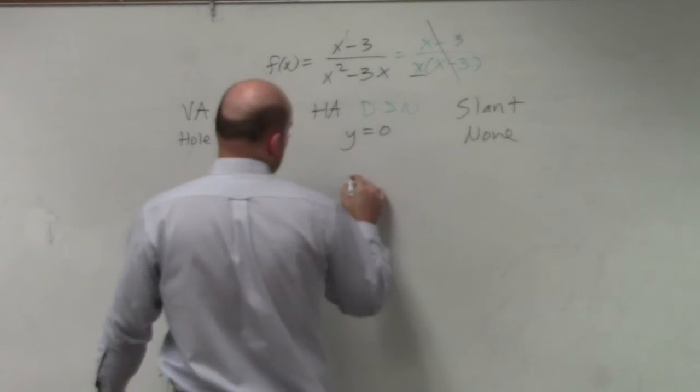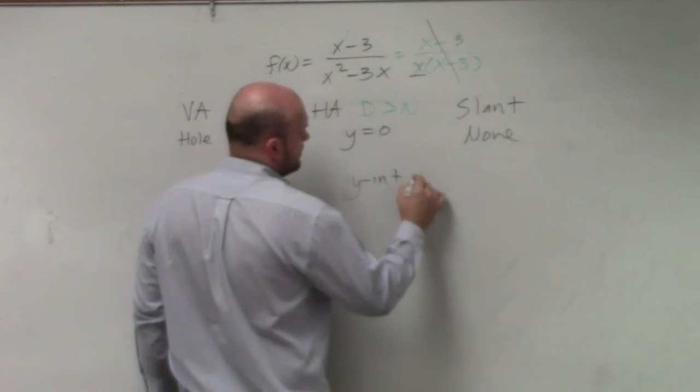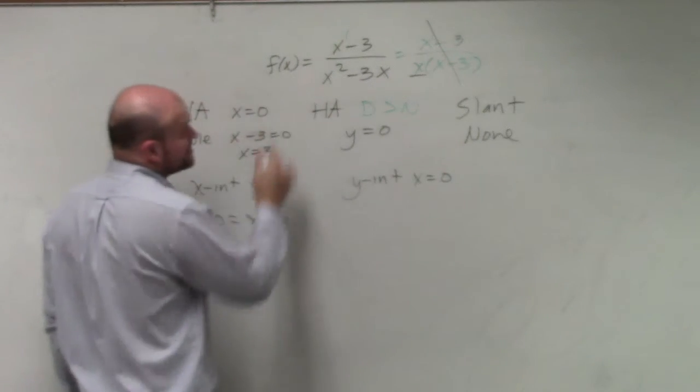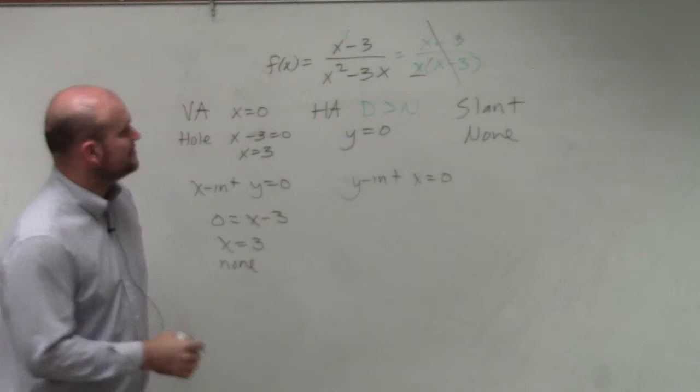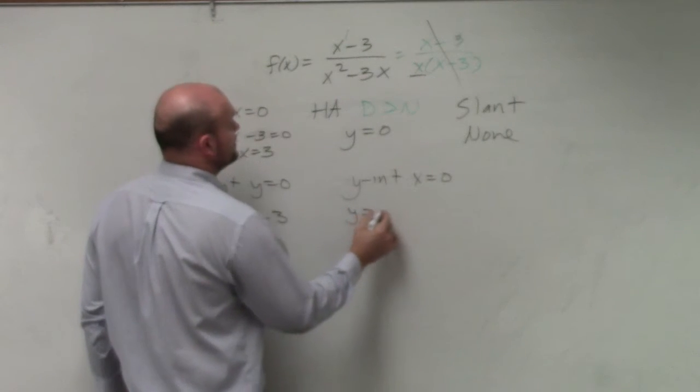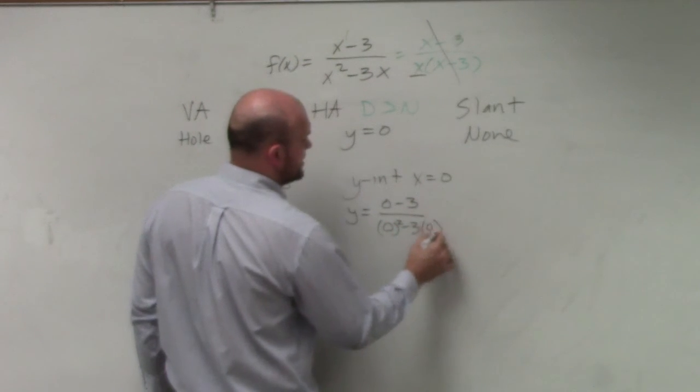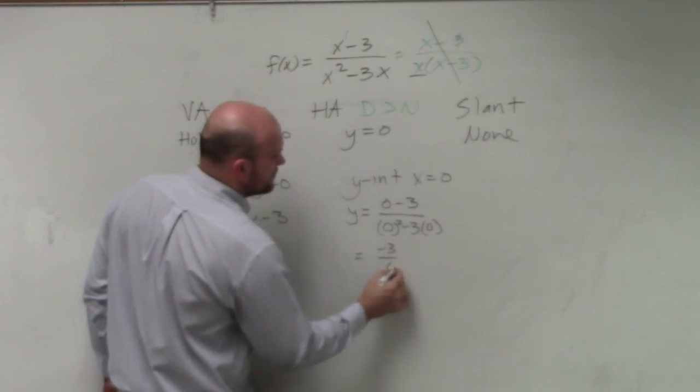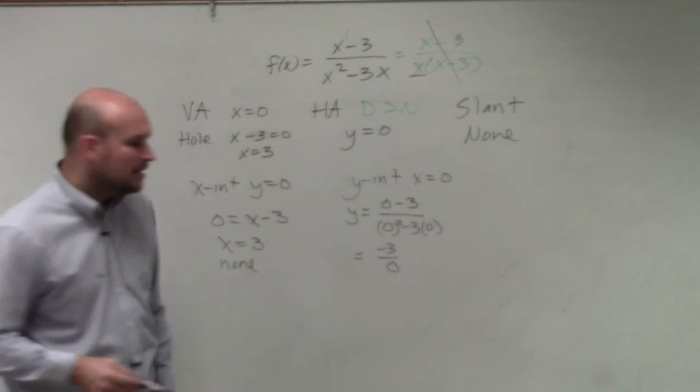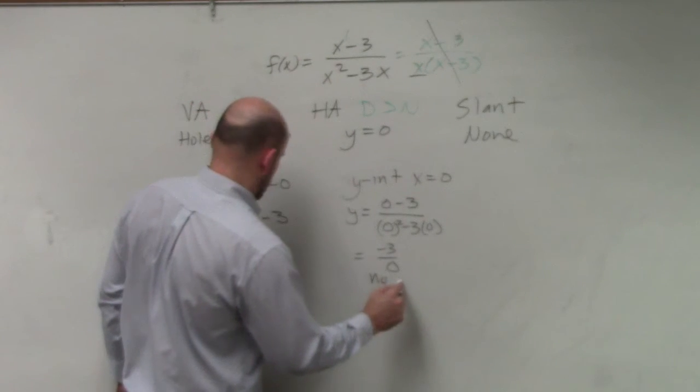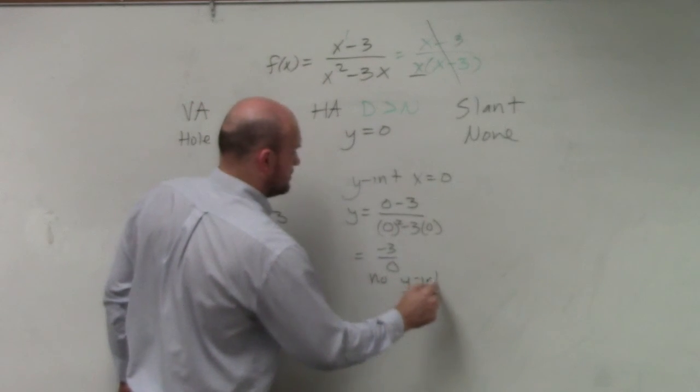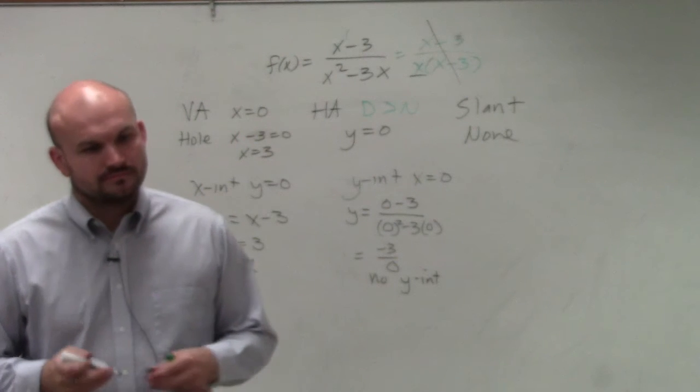To find the y-intercept, x equals 0. So you just plug 0 in for x, and we end up getting y equals 0 minus 3 over 0 squared minus 3 times 0, which is negative 3 over 0. Can you divide by 0? Nope. So there's no y-intercept.